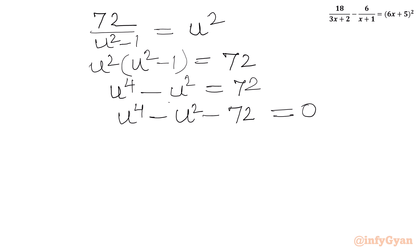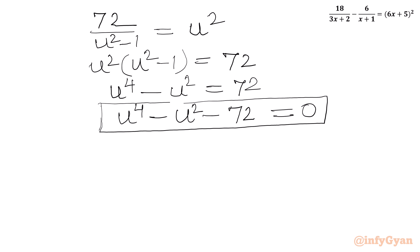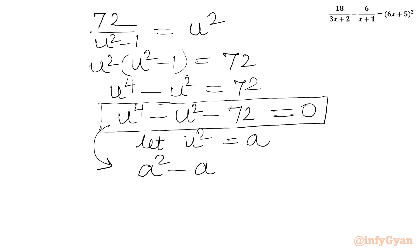This is a quartic equation, but it is also quadratic in u². It is better to substitute u² = a. So our equation becomes a² − a − 72 = 0.